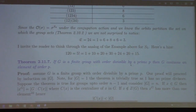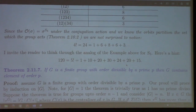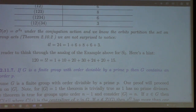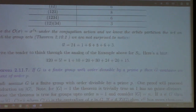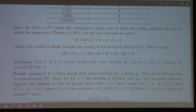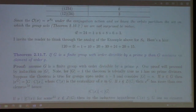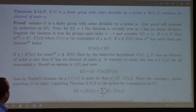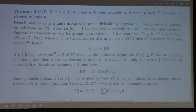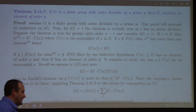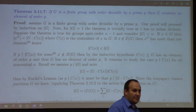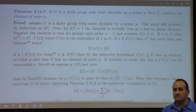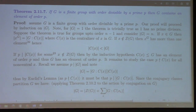Now this brings us to Cauchy's theorem. If G is a finite group with order divisible by a prime P, then G contains an element of order P. I've made no assumption that G is cyclic or even that G is abelian. One of your homework problems is to prove this in the context that G is abelian.